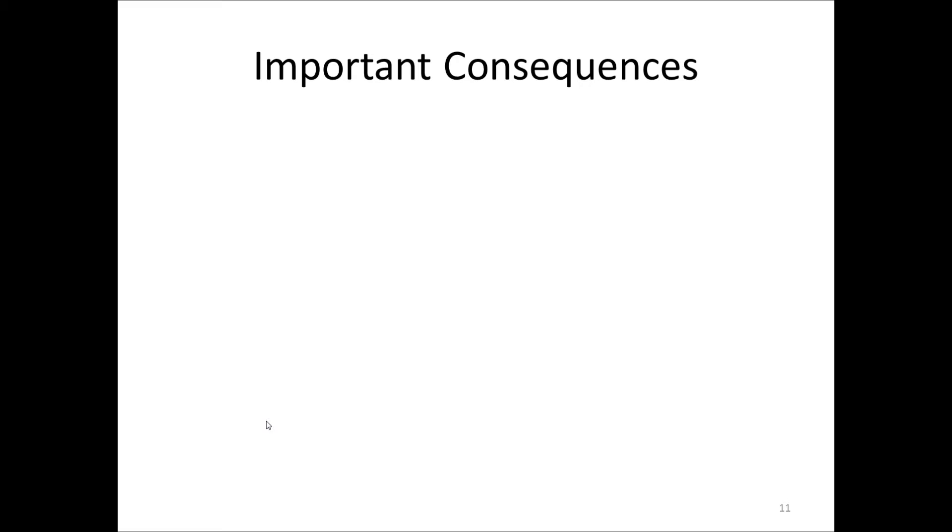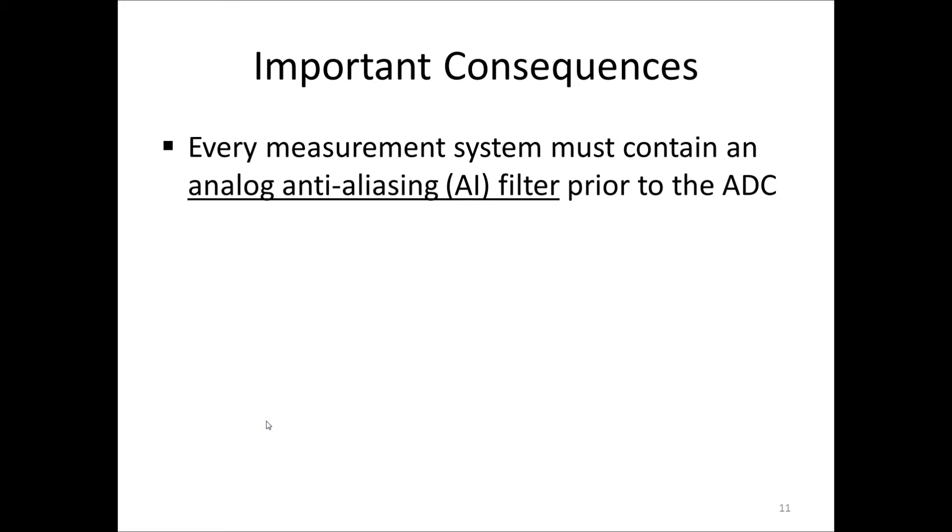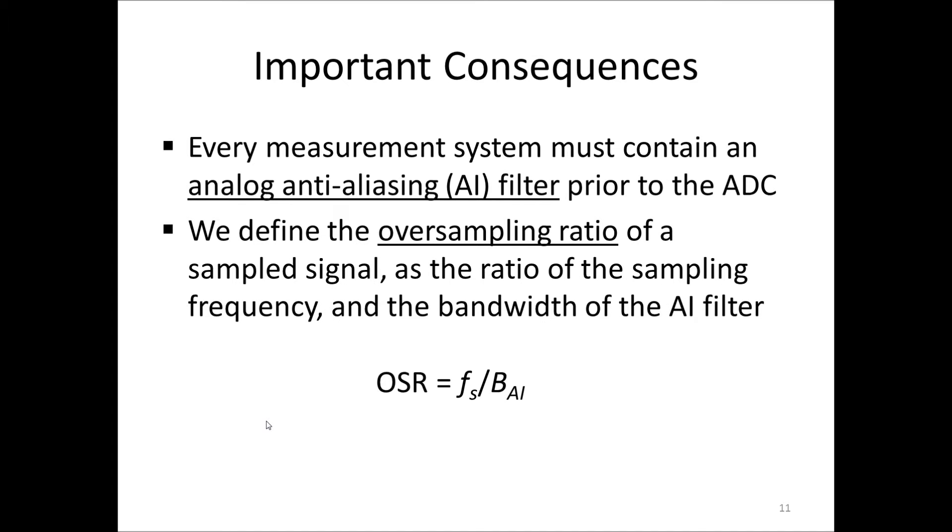The aliasing phenomenon has some important consequences. First, every measurement system, for noise and vibration analysis at least, must contain an analog anti-aliasing filter prior to the A to D converter, the analog to digital converter. Secondly, we define the oversampling ratio of a sampled signal as the ratio of the sampling frequency and the bandwidth of the analog anti-aliasing filter. So, the oversampling ratio is the sampling frequency divided by the bandwidth of the filter.